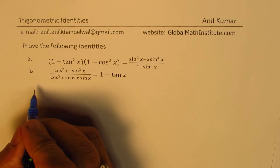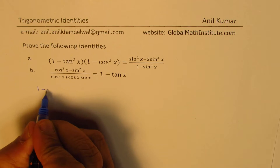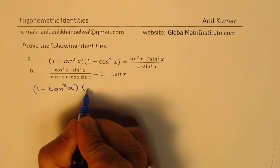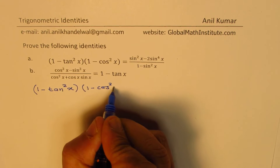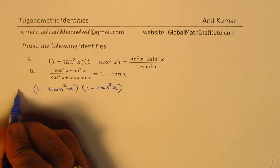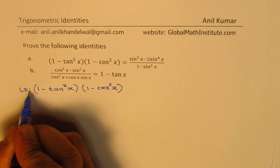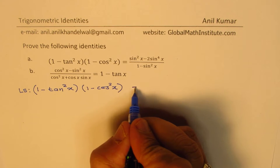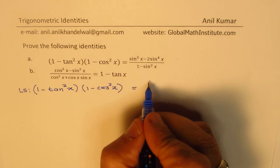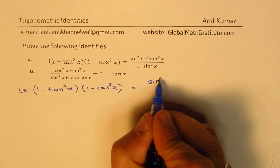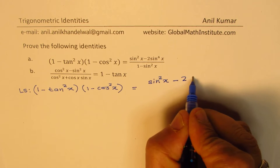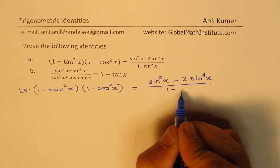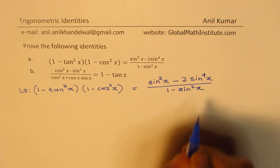Let's begin with the very first one, which is 1 minus tan squared x times 1 minus cos squared x — that is the left side. Let me write down the right side clearly; the right side is sin squared x minus 2 sin to the power of 4x over 1 minus sin squared x. That is what we want.